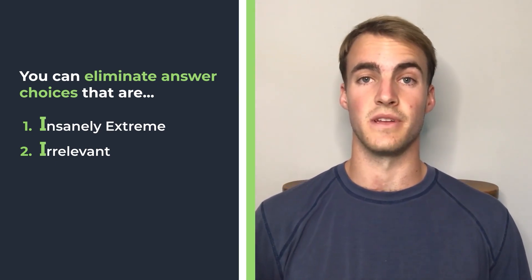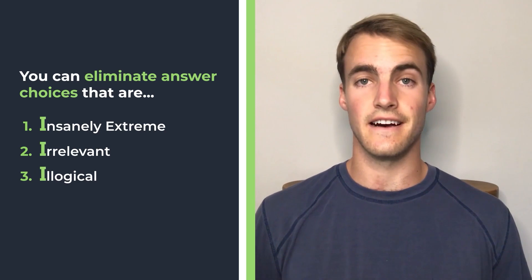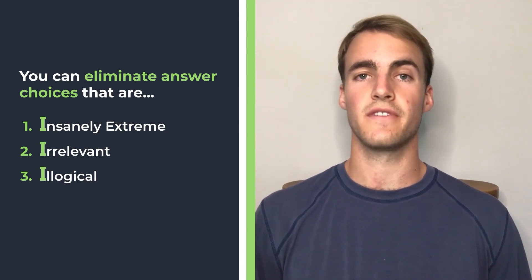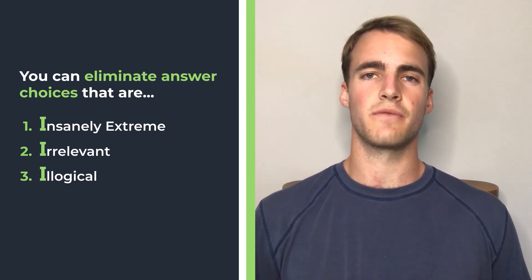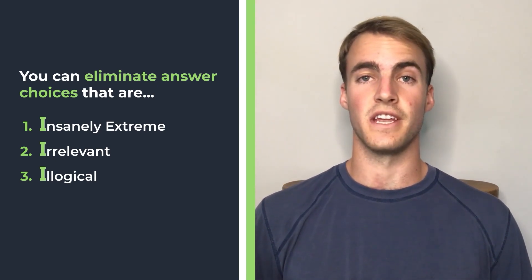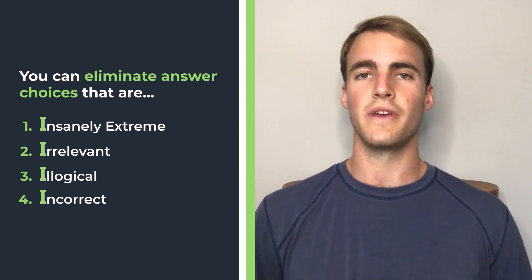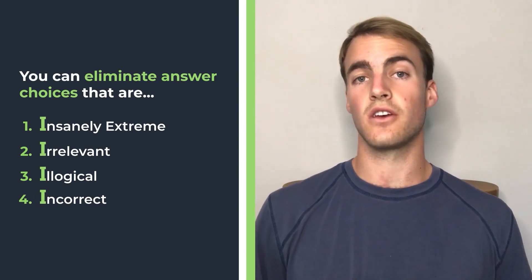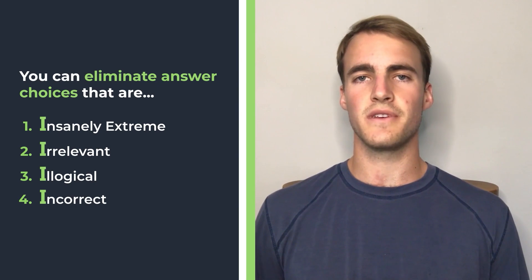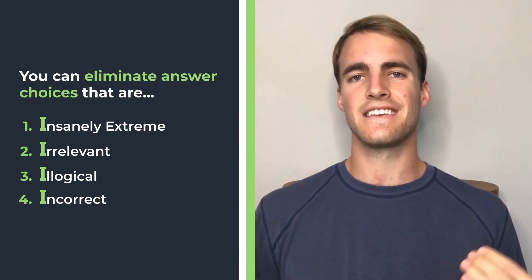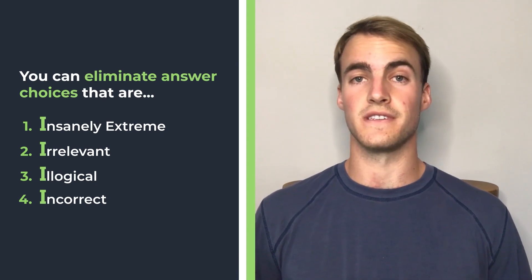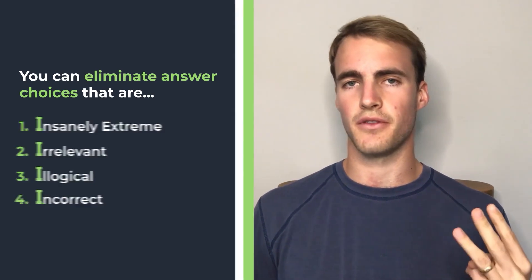The third I of process of elimination is answer choices that are illogical. These answer choices are often easy to spot because they do not make sense on the surface and do not really relate to the logic of the passage. And the fourth I of process of elimination are answer choices that are incorrect. We can eliminate these because they go directly against what the passage is saying, or the passage simply does not support the answer choice. And this leads us into our next tip, because often to find if an answer choice is incorrect, we need to use tip number three.